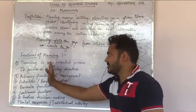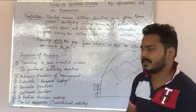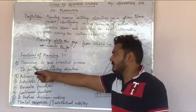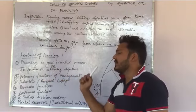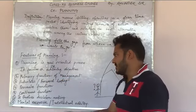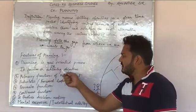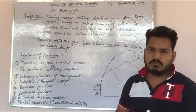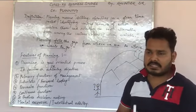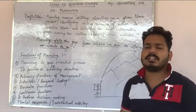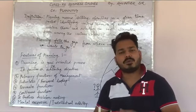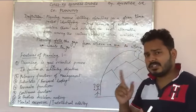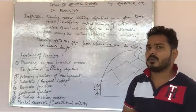Now come towards the features. इसके क्या-क्या features होंगे, उनको भी हम discuss कर लेते हैं. First: it is a goal-oriented process. Planning क्या है — goal-oriented process है, मतलब it focuses on achieving objective. If you are planning without any goal, it will be a futile exercise, meaningless — उसका कोई फायदा नहीं होगा. Planning हमेशा goal के लिए की जाती है, तो goal-oriented process है.